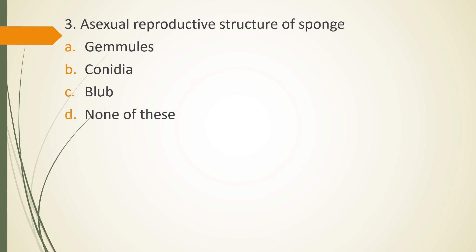Question 3. Asexual reproductive structure of sponges is gemules, conidia, bulb or none of these. The correct answer is option A. Gemules.